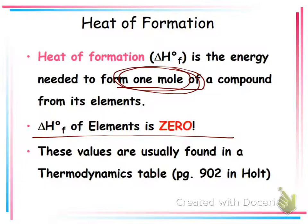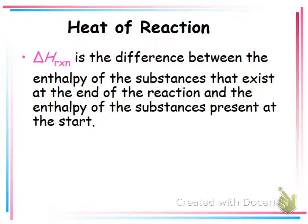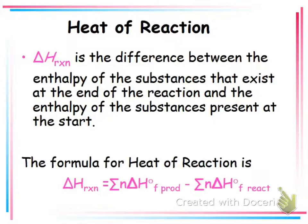There's a table in your book with the values. You will not have to look up the values. You'll always be given the values to find. Like today on your worksheet, there at the bottom. Heat of reaction is the difference between the enthalpy of the substances that exist at the end of the reaction and the beginning of the reaction. The formula looks like this. It's way scarier than it looks. Or than it is. It looks way scarier than it is. I said that. I said that backwards.